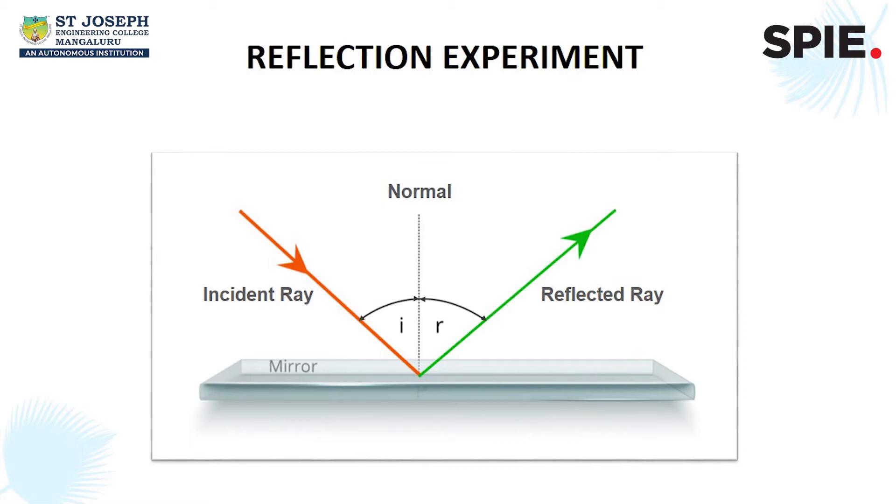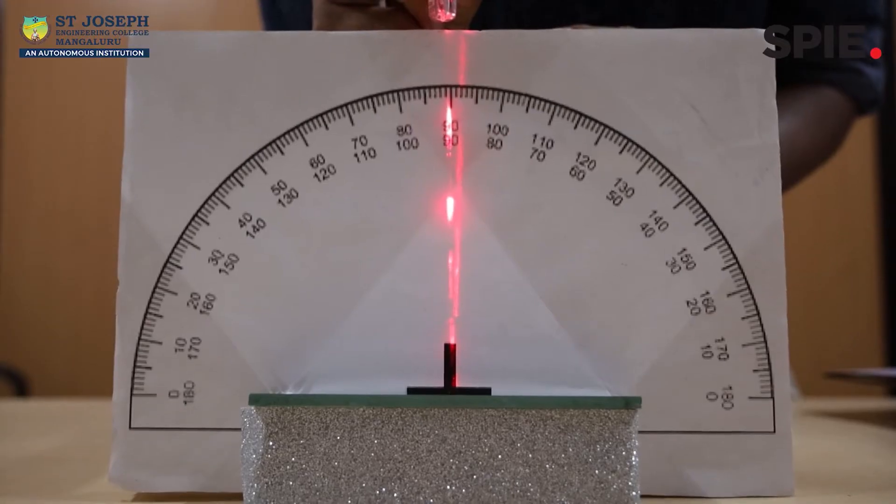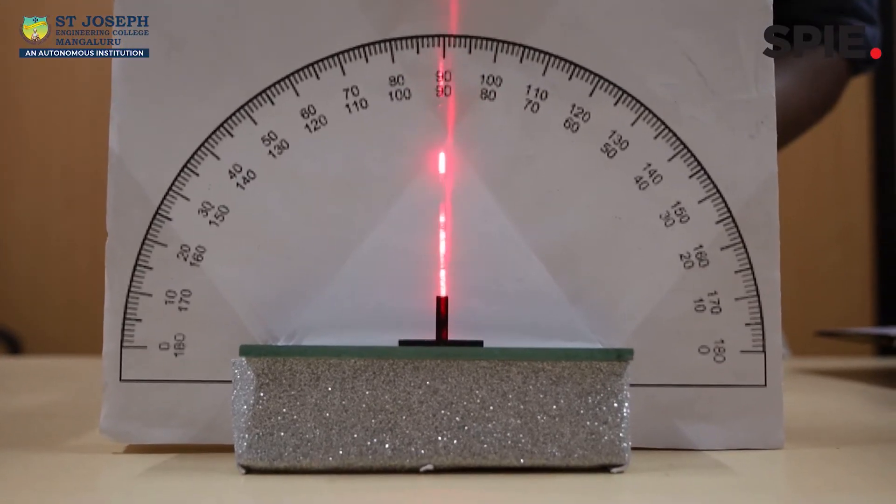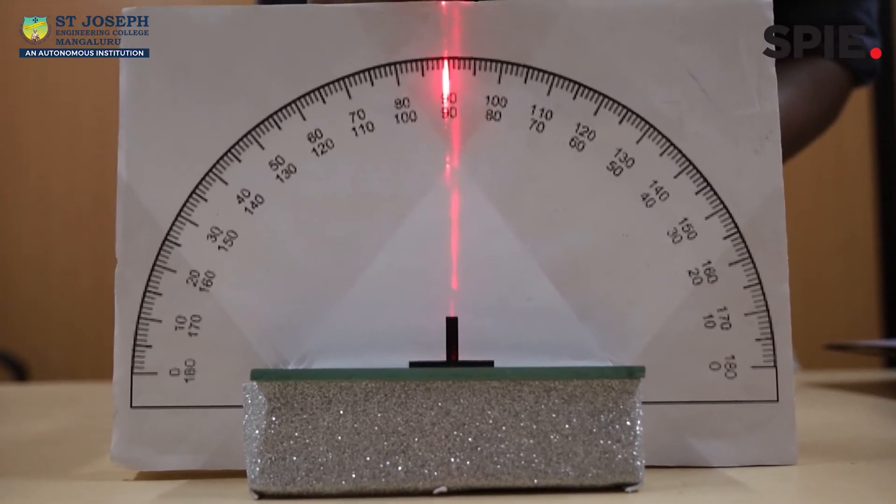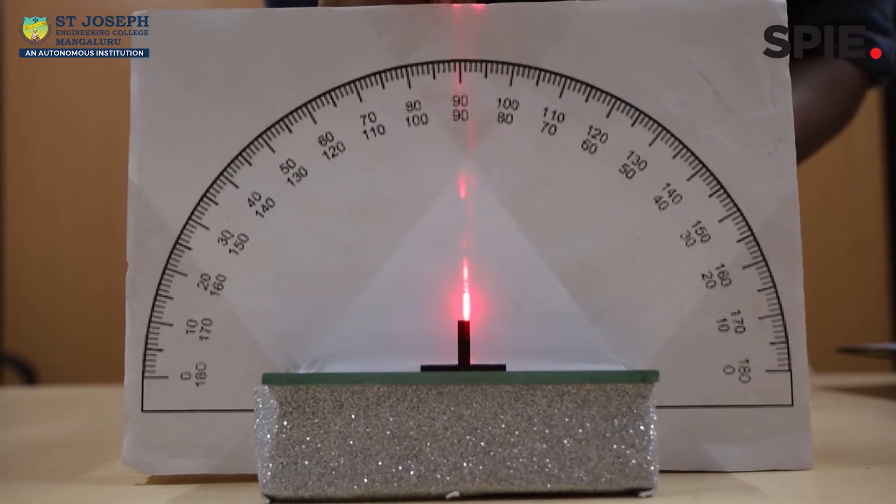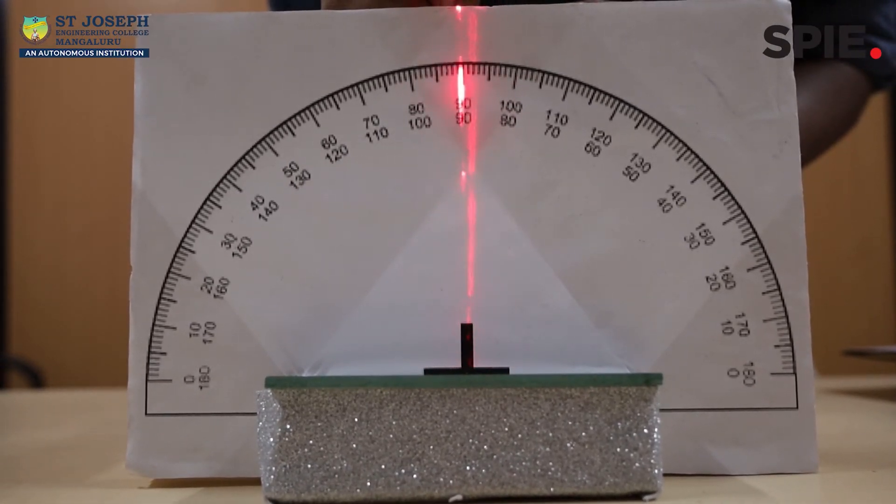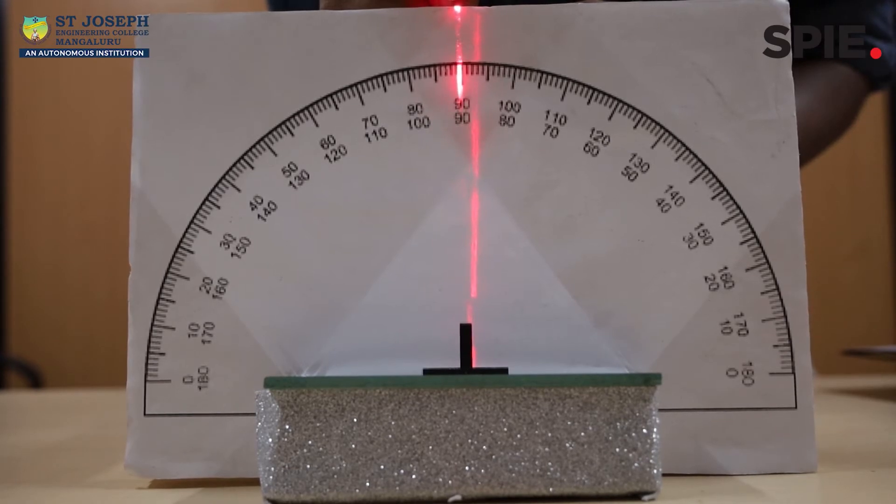Here, I is the angle of incidence and R is the reflected angle. We can see that when the light is projected from the top, that is perpendicular to the mirror, the light bounces back. Here, both the angle of incidence and the angle of reflection are zero.